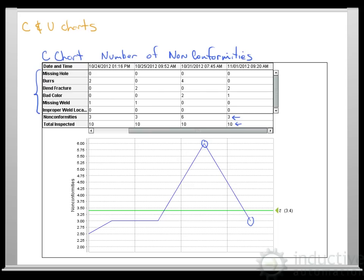It's that straightforward. We have our C bar, which is our average of nonconformities. We take our count here in this row, three plus six plus three plus three, for every one of the samples. Total that up, then divide it by our number of samples, and that gives us our average of our nonconformities. Every time we took a sample, we had 3.4 nonconformities that occurred.